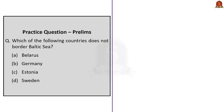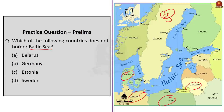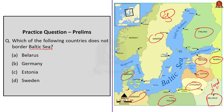The second question is a map-based question: which of the following countries does not border the Baltic Sea? The Baltic Sea is surrounded by nine countries — Denmark, Germany, Poland, Lithuania, Latvia, Estonia, Russia, Finland and Sweden. Belarus is a landlocked country and does not border the Baltic Sea. So the correct answer is option A, Belarus.